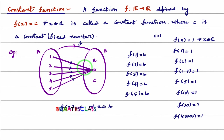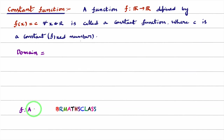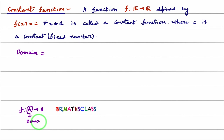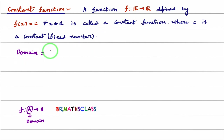Now we will see what is the domain, codomain, and range of a constant function. We know that if f is a function from A to B, then set A is called the domain. Here, it is a function from the set of all real numbers to real numbers. So the domain of this function is all real numbers.